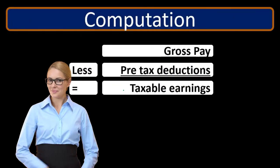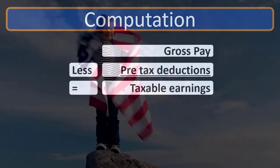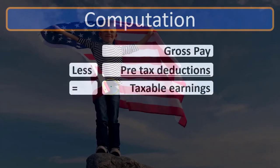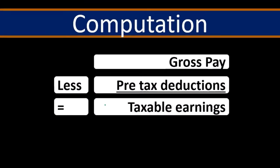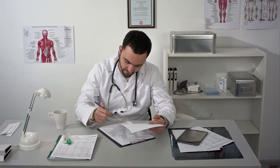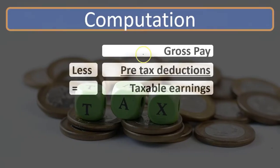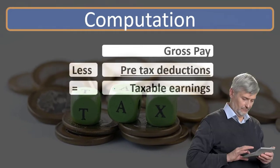The federal income tax may have different taxable earnings than the Social Security or Medicare tax. Social Security and Medicare are usually more of a flat tax, so we can generally use the gross pay to calculate them. We take the pre-tax deductions out mainly to get to taxable earnings for calculating the federal income tax, which is typically the most complicated.